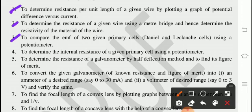And the fourth one, to determine the internal resistance of a given primary cell using a potentiometer. And fifth one, to determine the resistance of a galvanometer by half deflection method and to find its figure of merit. Sixth one, to convert the given galvanometer of known resistance and figure of merit into first, an ammeter of a desired range, say 0 to 30 milliamps. And second, voltmeter of desired range, say 0 to 3 volts, and verify the same.